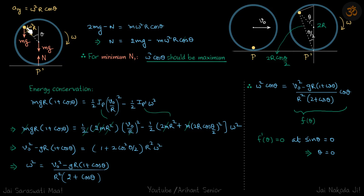With respect to the center, the acceleration of A is ω²r toward the center. For the rest of the system the acceleration is toward the right. We are only concerned with the forces and acceleration in the y-direction. The hoop does not accelerate in the y-direction.